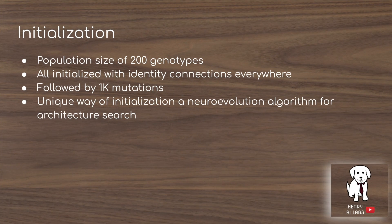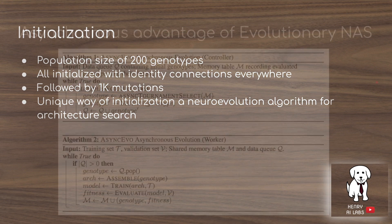The initialization technique used in this paper is very interesting. From a population of 200 genotypes, all are initialized with identity connections everywhere — very different from minimal or random initialization. They then perform 1,000 mutations of each of these initializations to start off the search, which is a unique way of initializing and also serves as a way of verifying the mutation operation.